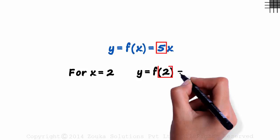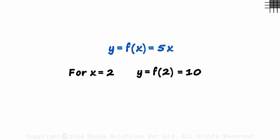5 times 2 is 10. We are just using y instead of f of x because it's a little easier to write it. For x equal to 2, the output y will equal 10.